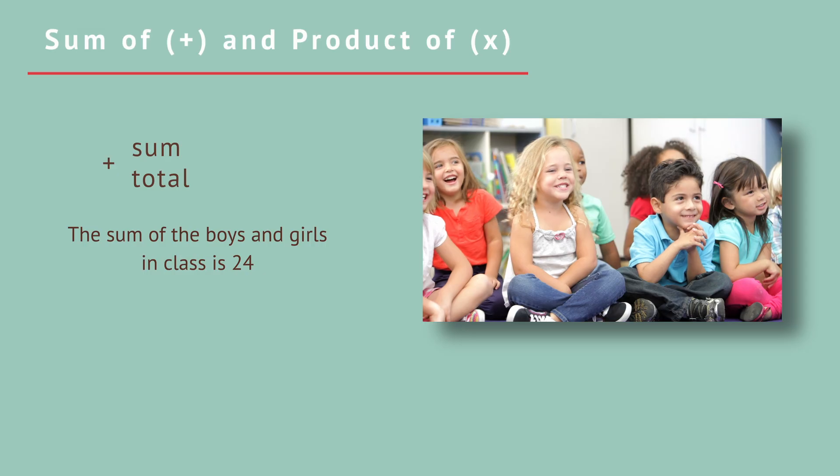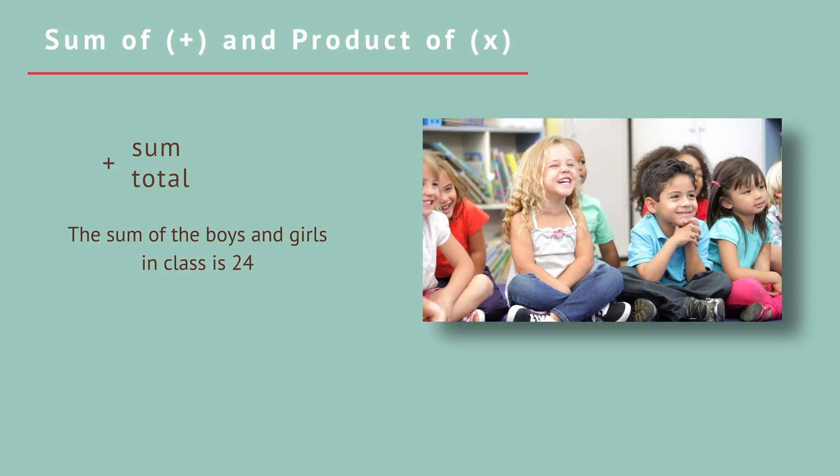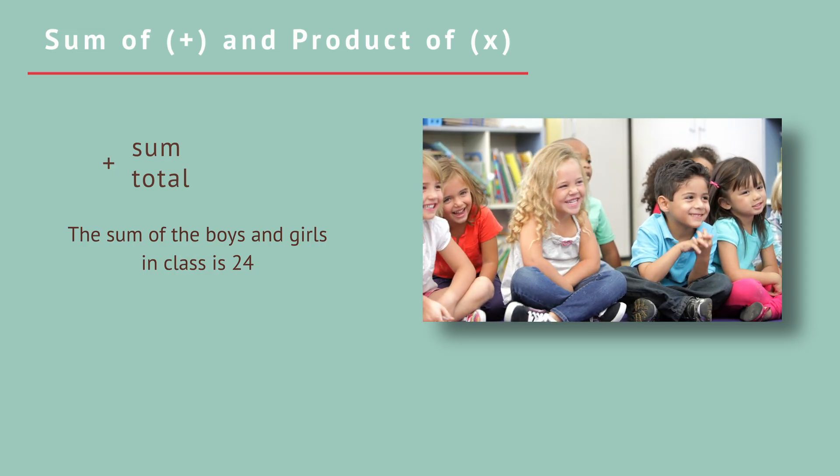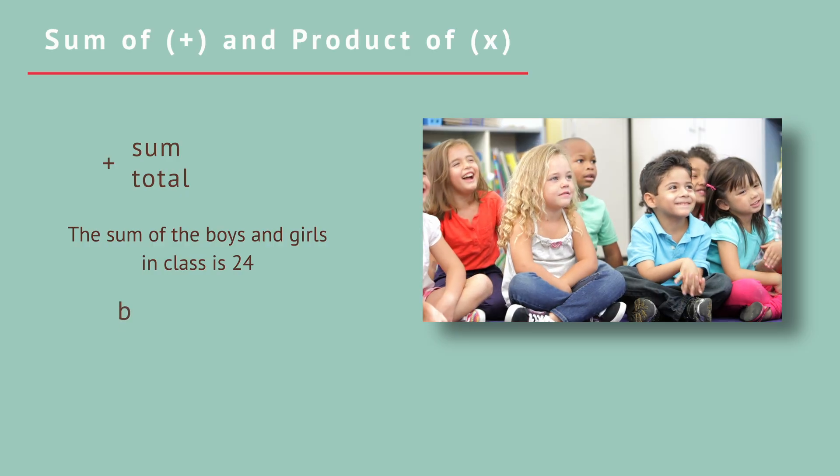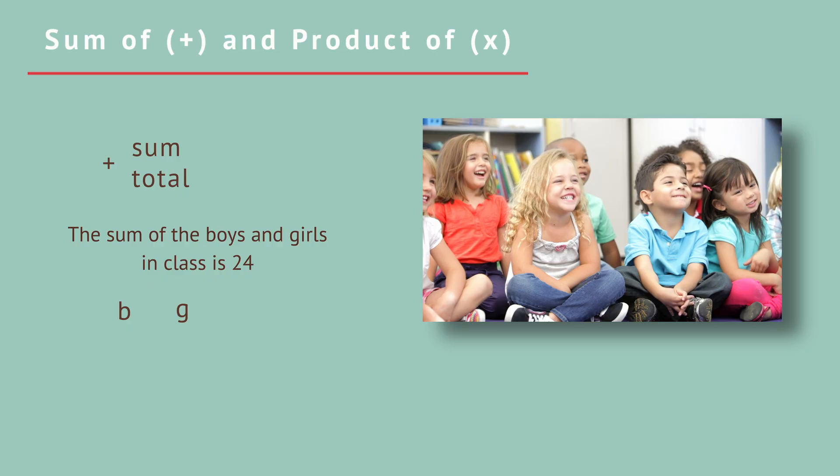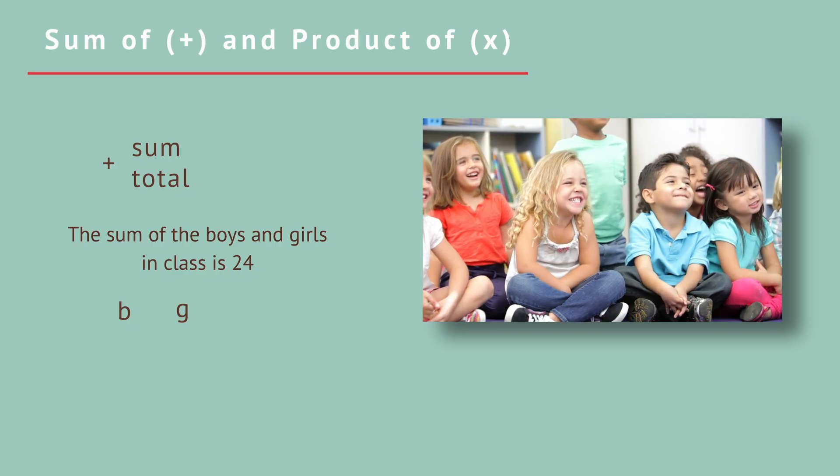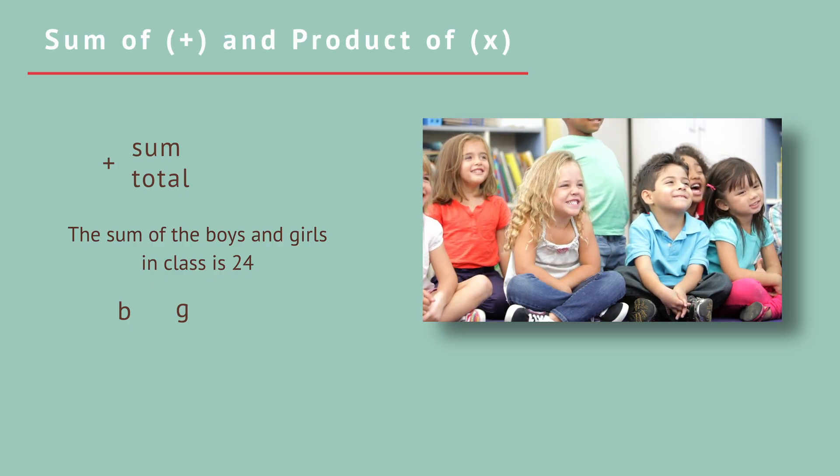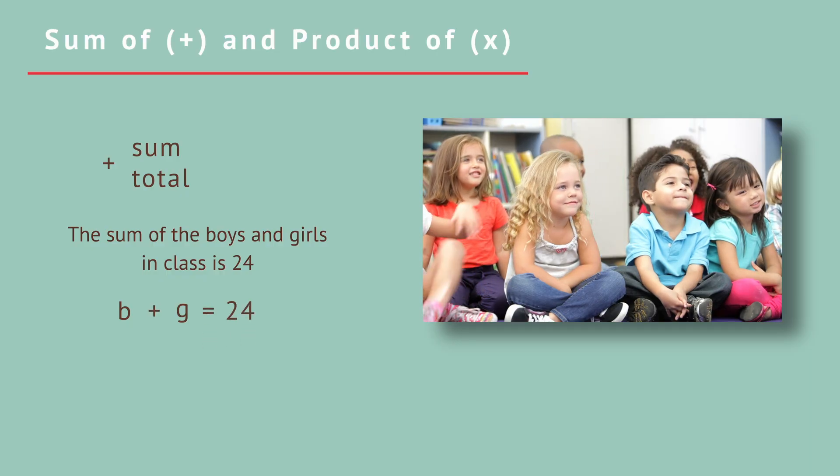Sum of and product of. Another way you will use the plus symbol is when you see the word sum, or total. The sum of numbers is their total when added together. For example, the sum of the boys and girls in class is 24. Right now, we don't know how many boys, so let's call that variable b, and the number of girls is another unknown, so let's call that g. But we do know that the sum of the two numbers is 24. So we can write that as b plus g equals 24.